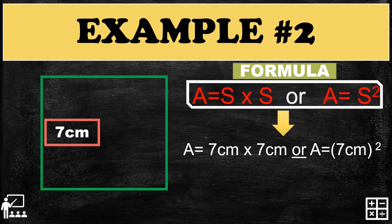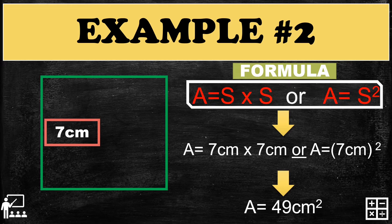We multiply the number by itself: 7 multiplied by 7 gives you 49. For the units, centimeters times centimeters gives you centimeters squared. The answer for this example is 49 centimeters squared.